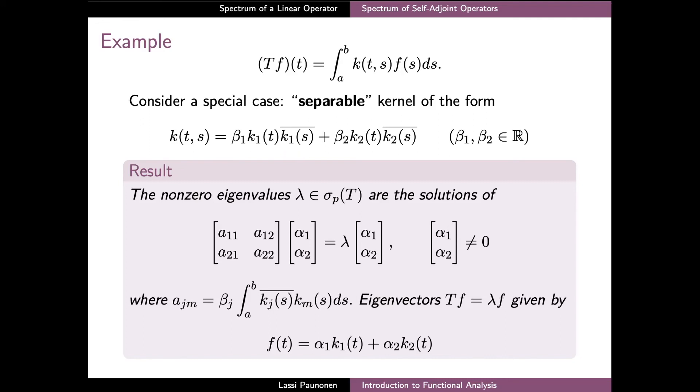The analysis generalizes easily to the case of a greater number of terms, but here we can focus on the situation where k consists of two terms, each of them being a real scalar multiple of a function k of t and the complex conjugate of the same function with argument s. In this situation,